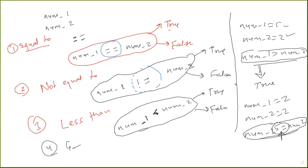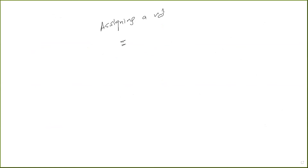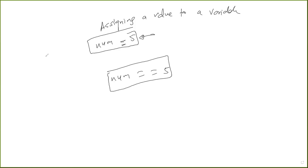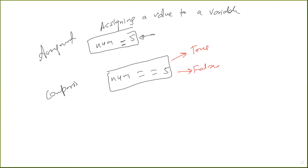One important thing to highlight before writing code: please remember that a single equal to sign is used for assigning a value to a variable. For example, if I say num = 5, it means the variable num stores the integer five. But if I say num == 5, that is comparison. A single equal to sign assigns, a double equal to sign checks. This would give you either true or false, depending on whether num is five or not.